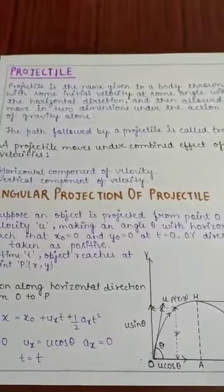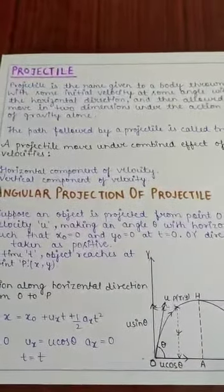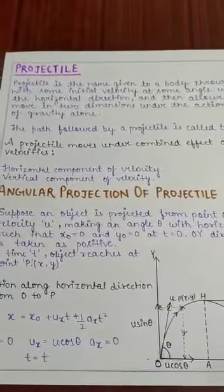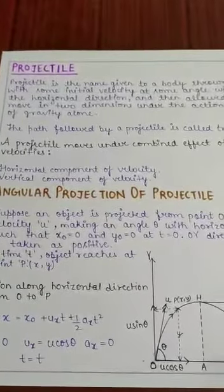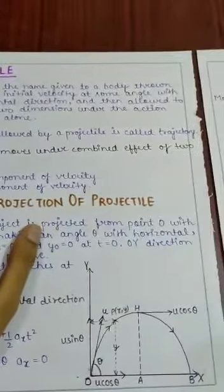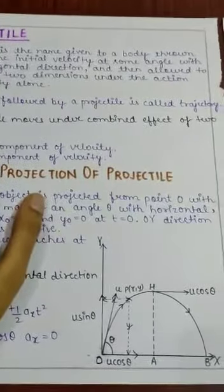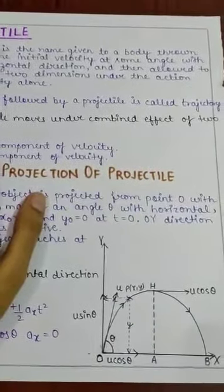For example, bullet fired from a gun is also an example of projectile or free fall of a stone is also an example of a projectile. The path followed by a projectile is called trajectory. Jo path projectile follow karta hai, usse hum trajectory bolte hai.